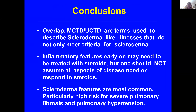In conclusion, overlap disease and mixed connective tissue disease are terms used to describe scleroderma-like illnesses that do not only meet criteria for scleroderma. The inflammatory features, particularly early on, may need to be treated with steroids, but one should not assume that all aspects of the disease need or respond to steroids. Scleroderma features are most common throughout the course of the illness, and we really need to watch for the severe complications of pulmonary fibrosis, arthritis, and pulmonary hypertension. Thank you.